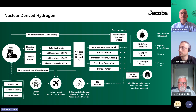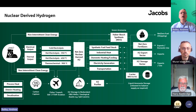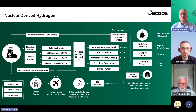There's a more detailed slide showing the processes involved in generating nuclear-derived hydrogen — moving from cold electrolysis right up to thermochemical production of hydrogen at 900 degrees Celsius.